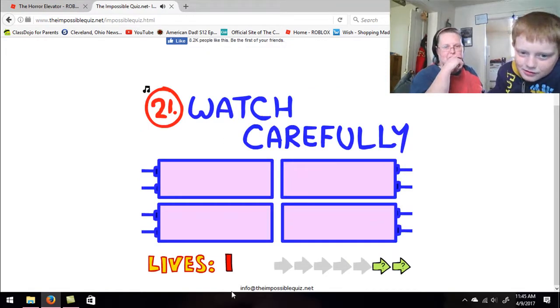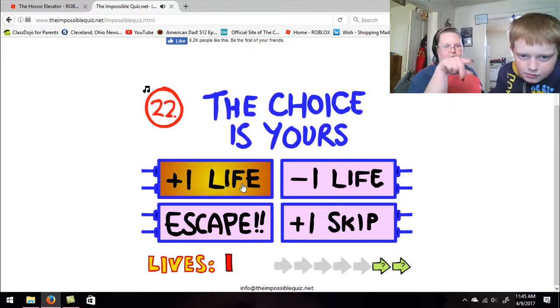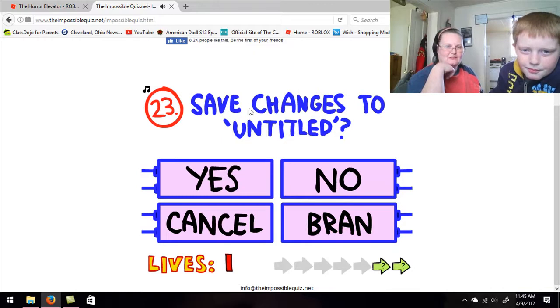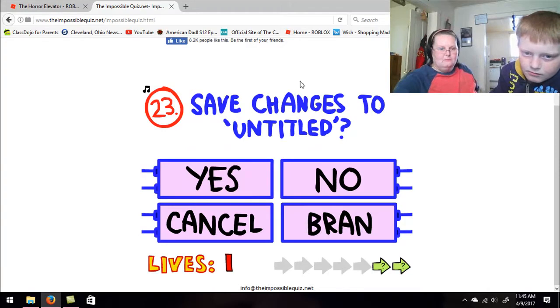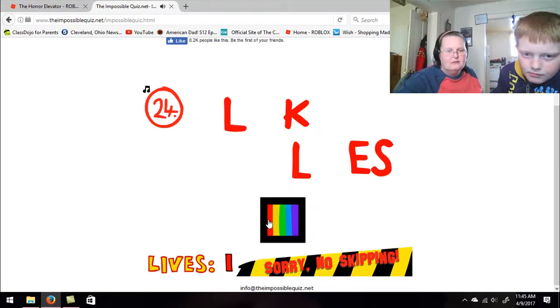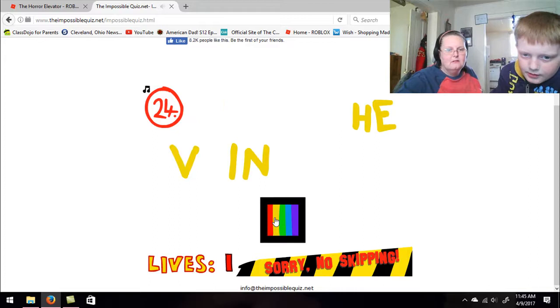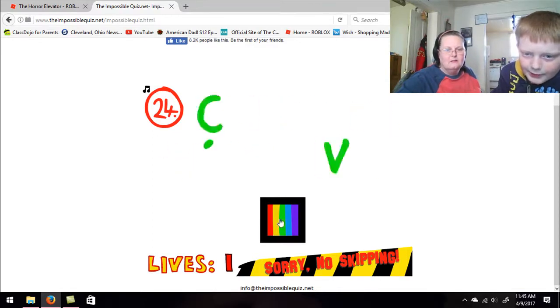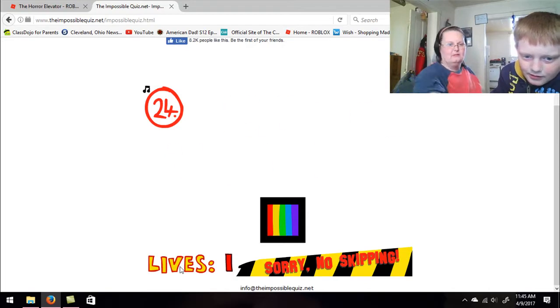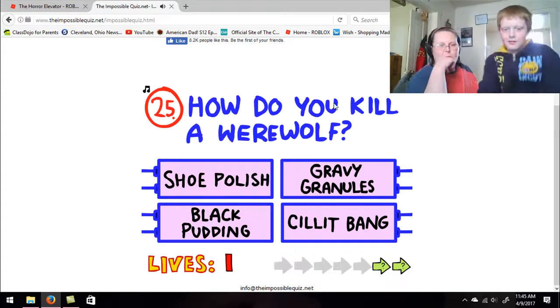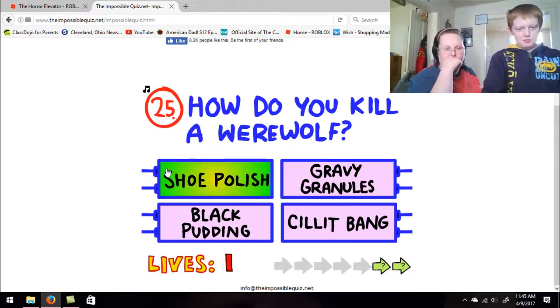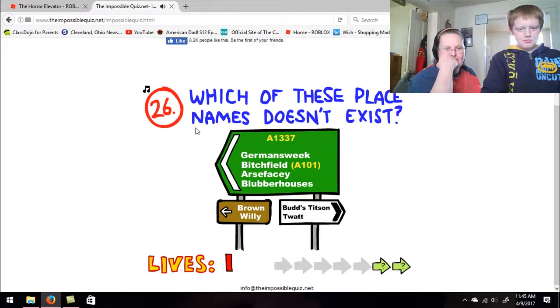Watch carefully. That one was green, yes. Save changes to Untitled? Brain. Likes. Click the V in lives. I know the answer. Where do you kill a werewolf? Which of these place names doesn't exist? I hope you've been paying attention to the question numbers.